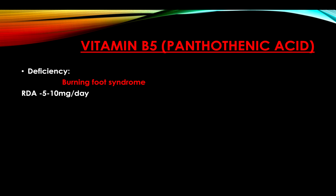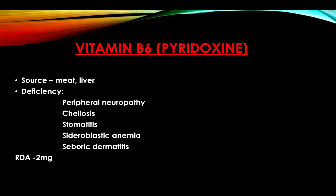Vitamin B5, or pantothenic acid — its deficiency produces burning foot syndrome. RDA is 5 to 10 mg per day. Vitamin B6, or pyridoxine — sources include meat and liver. Deficiency produces peripheral neuropathy, cheilosis, stomatitis, sideroblastic anemia, and seborrheic dermatitis. RDA is 2 milligrams.